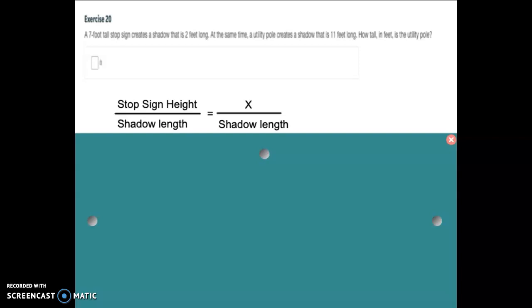So when I set up these ratios to be able to compare, I want to make sure that I have the same thing in the numerator and the same thing in the denominator. So I've got the stop sign height here. I've got X here because that will be the height of the utility pole. And then I've got the shadow length at the bottom of both of these.